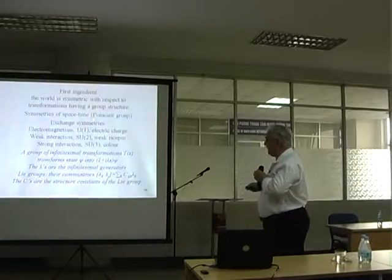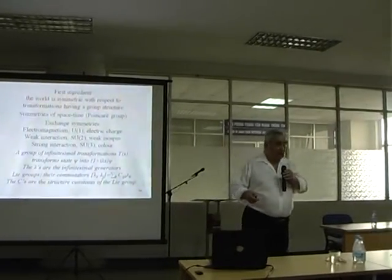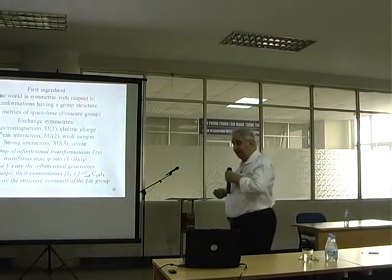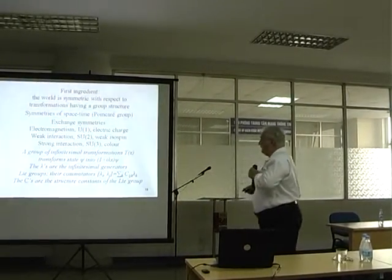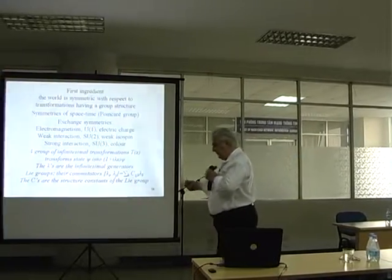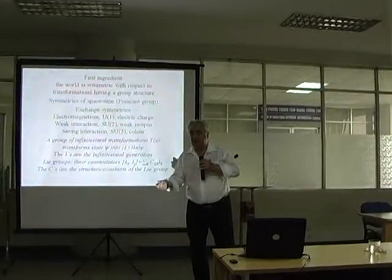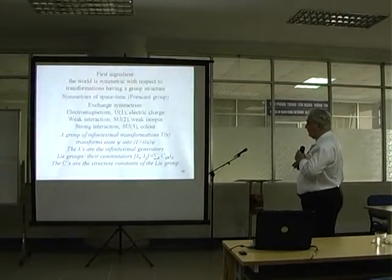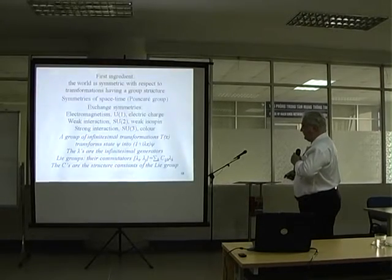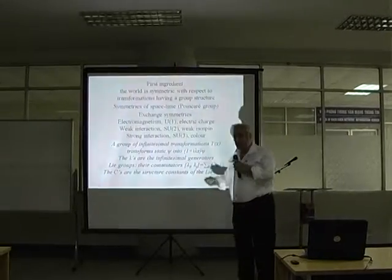The first ingredient is symmetries — symmetries with respect to group transformations. Mathematicians and physicists work hand in hand here; concepts like Lie groups are central. We have symmetries of space — the Poincaré group — made of translations in space and time, rotations in space, and Lorentz transformations. We also have internal symmetries: electromagnetism described by U(1), weak interaction by SU(2), and strong interaction by SU(3).